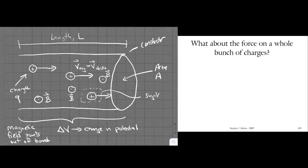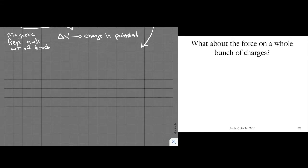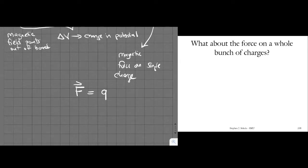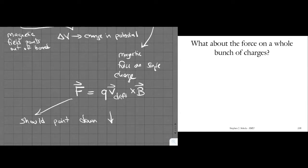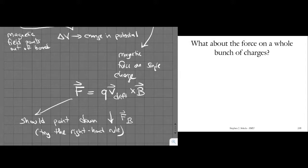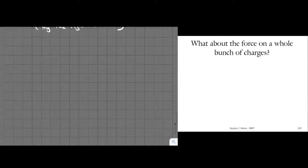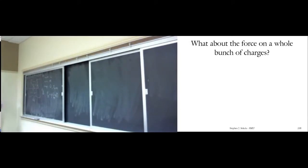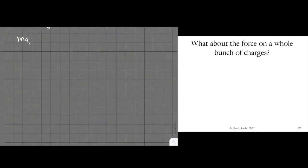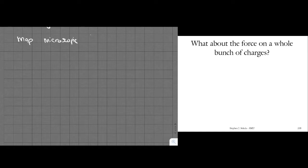Back to the conductor: for the magnetic force on a single charge q, we just say F = qv × B, where v is v-drift. The B field points out of the board, so by the right-hand rule — velocity to the right, B out of the board — the force points downward. So the force on any single particle due to the magnetic field points down. Now we want to know the consequence for the aggregate of all this charge and what happens to the material in which it's trapped. To do this we need current density.